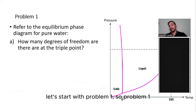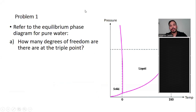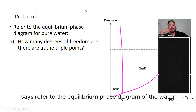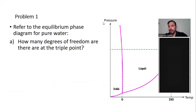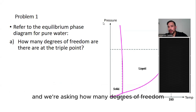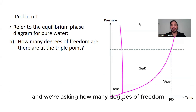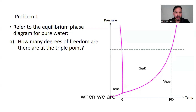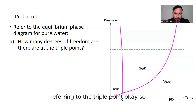Let's start with problem one. Problem one says: refer to the equilibrium phase diagram of pure water. We are asked how many degrees of freedom there are when referring to the triple point.